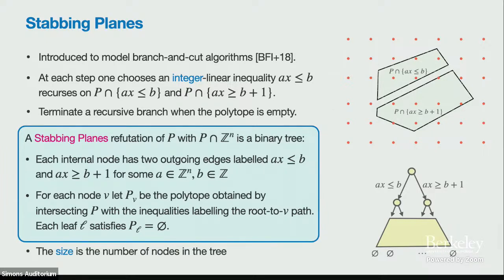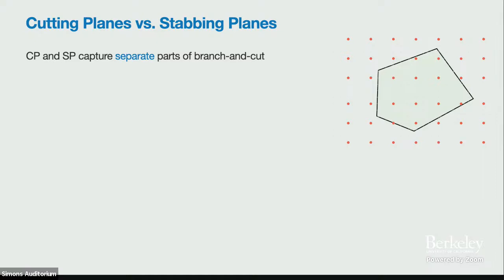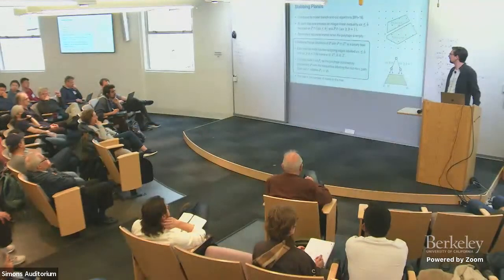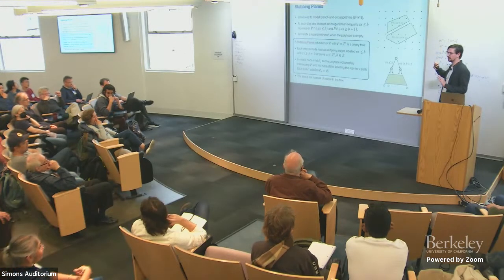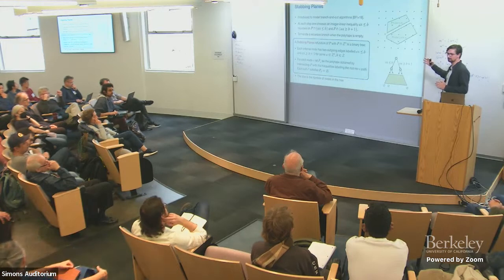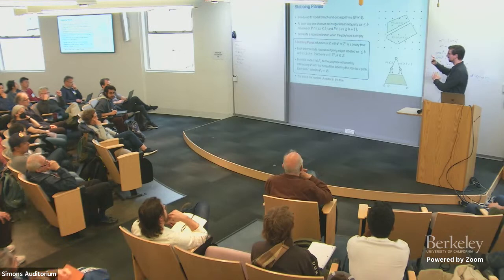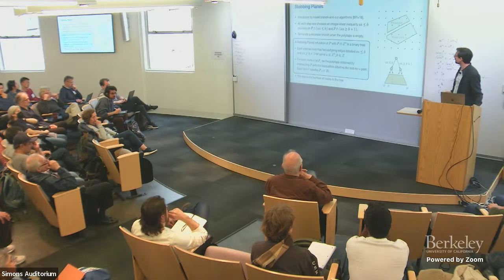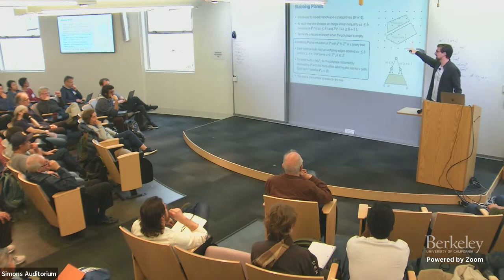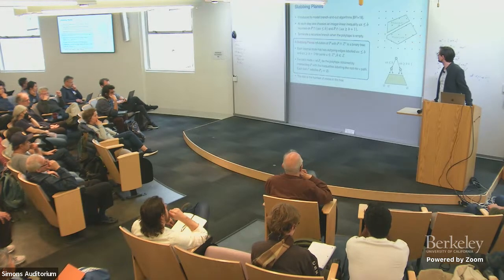The size of the proof is just the number of nodes, which is polynomially related to the bit complexity of writing down the proof. On the question of whether every branch makes progress: this is like resolution proofs — it's a non-deterministic thing. Practitioners have to worry about that, but I care only about the existence of the smallest such proof. This is a worst-case measure.